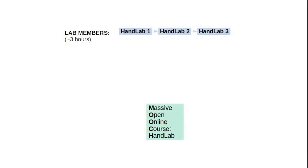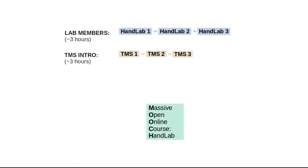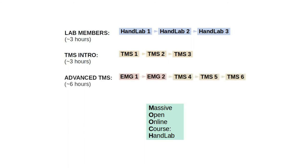All students of the Hand Lab should start with chapters HL1, HL2, and HL3. If you're using TMS in a short research project, maybe supervised by others, or if you're just interested to know a little bit more, then start with TMS 1, TMS 2, and TMS 3. If you're using TMS a lot — for example if you're running your own TMS research, or if you're just very interested in these topics — then complete EMG chapters 1 and 2, and TMS chapters 4, 5, and 6.